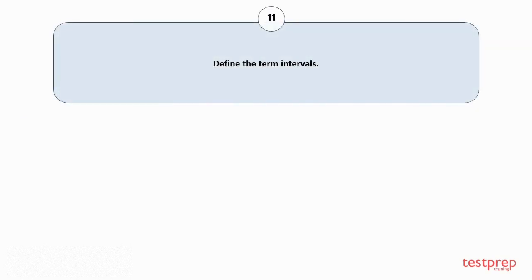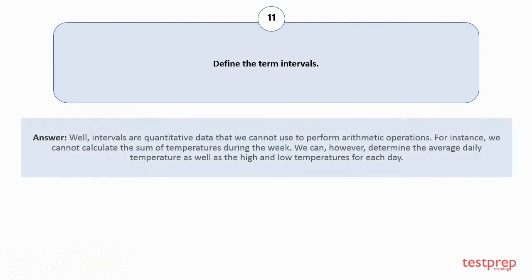Question number 11: Define the term intervals. Intervals are quantitative data that we cannot use to perform arithmetic operations. For instance, we cannot calculate the sum of temperatures during the week. We can, however, determine the average daily temperature as well as the high and low temperatures for each day.